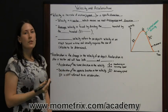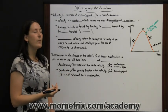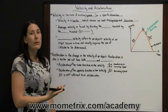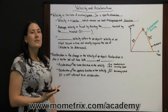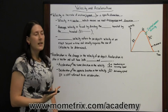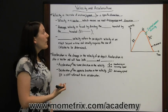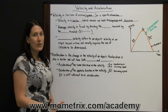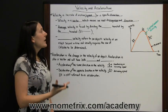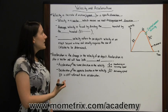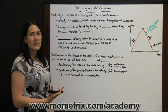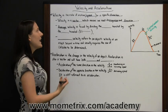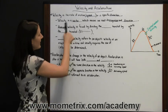We have to also know the direction. So if we just know we're going 30 miles an hour, that is only our speed. If we know we're going 30 miles an hour in a southwest direction, then our velocity is 30 miles an hour southwest, and that is a vector.